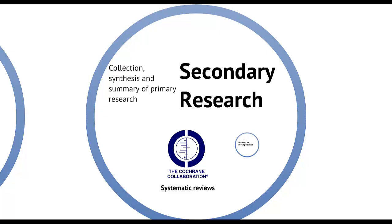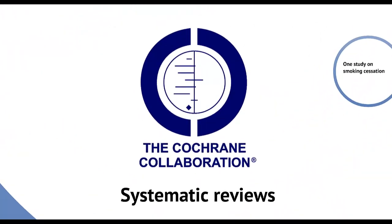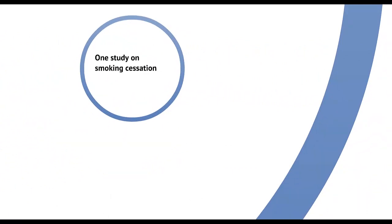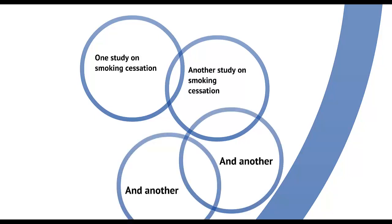Secondary research, rather than going out and collecting data at the patient level, instead gathers primary studies together and uses their results. Systematic reviews are the most common form of this. The Cochrane Collaboration has led the way in establishing much of the methodology around systematic reviews and disseminating them to clinicians and patients. Systematic reviews use systematic and transparent methods to identify as many studies as possible that answer the research question of interest, extracting all the data until all available studies have been exhausted. When the results from the individual studies allow it, they may be combined in what is called a meta-analysis.